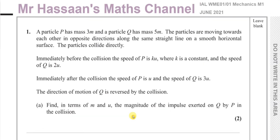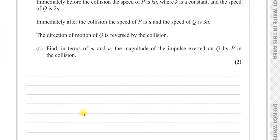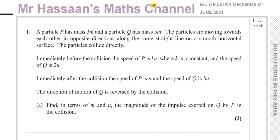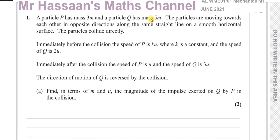I'm going to start with question number one, which is about momentum. It says: a particle P has a mass 3m and a particle Q has a mass 5m. The particles are moving towards each other in opposite directions along the same straight line on a smooth horizontal surface. The particles collide directly. Immediately before the collision the speed of P is ku, where k is a constant, and the speed of Q is 2u.